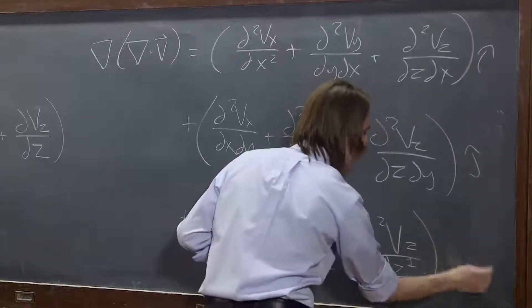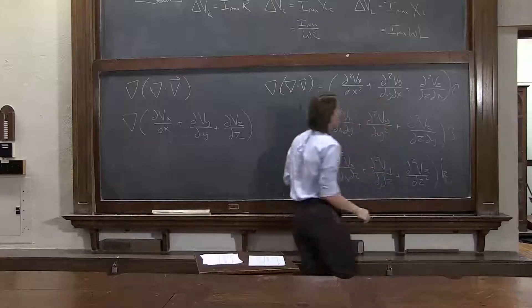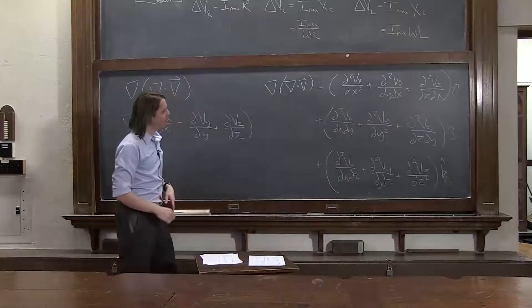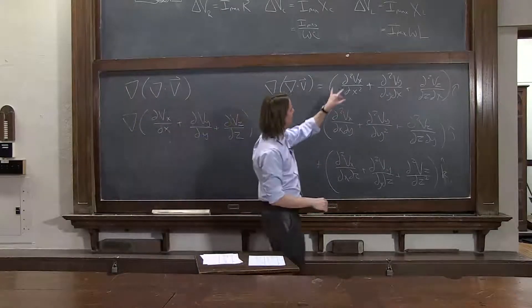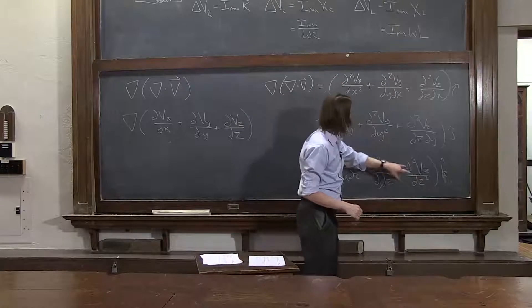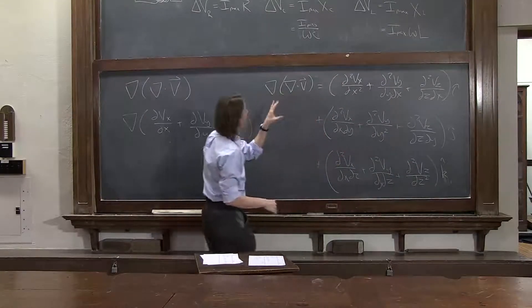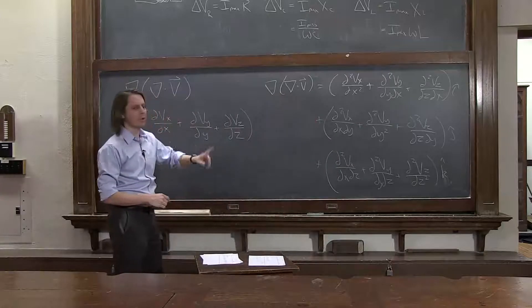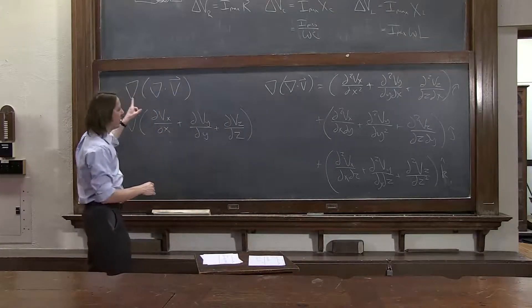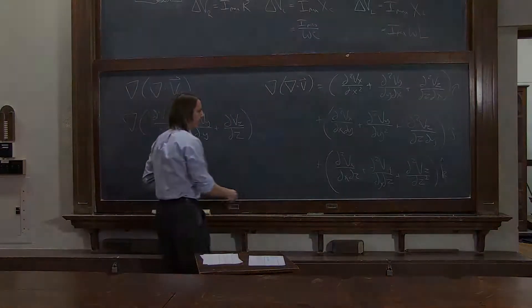So yeah, that looks right. So we've got a couple of second derivatives, d2 dx dz. The rest are all cross terms i, j, k. It came out as a vector just like it should. Okay, so we're going to need that later. That is the gradient of the divergence. So that's very good.